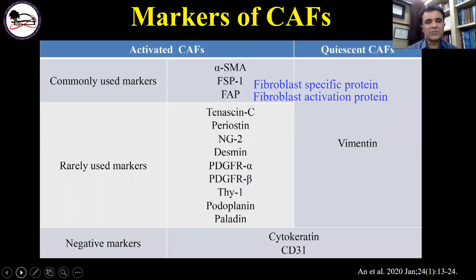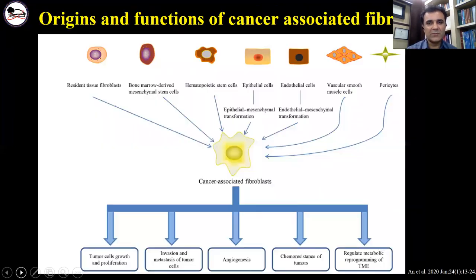There are commonly used markers for activated CAFs such as SMA, FSP, and FAP, and less commonly used markers such as tenascin, periostin, and paladin. There are also some negative markers — being positive for them argues against CAF identity, such as cytokeratin and CD31.